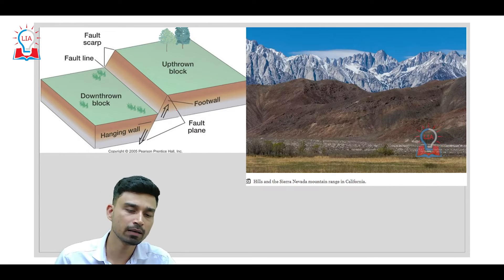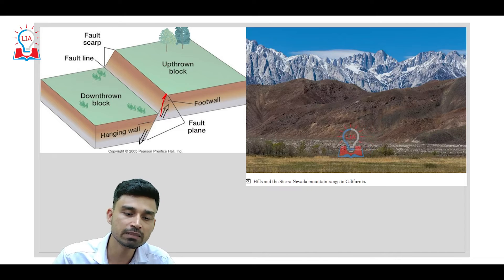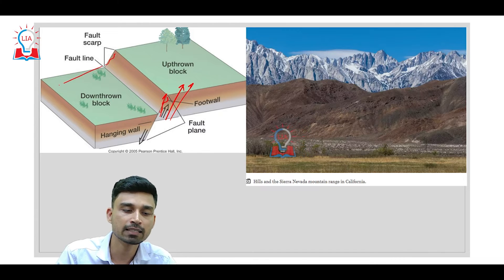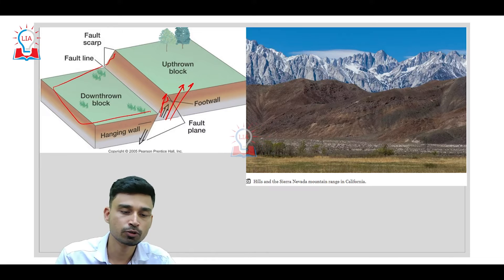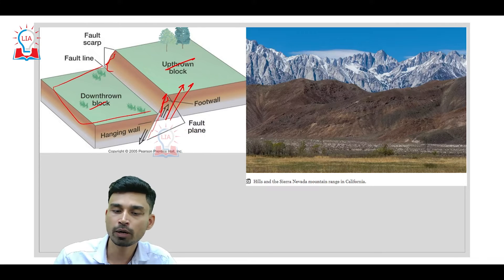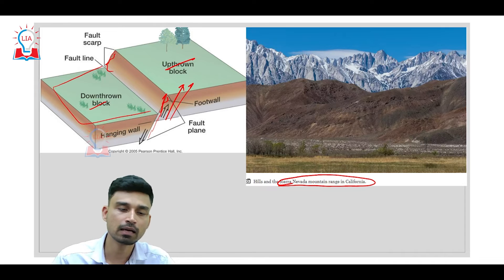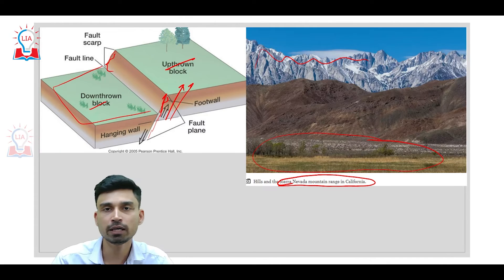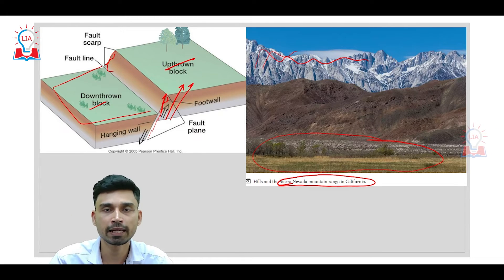Looking at this diagram, we can see that rather than moving in the downward direction, a part of the landmass is being thrown in the upward direction. As this landmass is thrown upward, its height rises compared to landmasses to its east. This region is called the hanging wall — this is the fault scarp, the upthrown block and the downthrown block. The Sierra Nevada mountain ranges in California are an example of a fault scarp. In the background we have the rising Sierra Nevada ranges, while in the front there is a depressed valley area. This mountain has developed due to upward movement, leading to the development of the Sierra Nevada ranges.